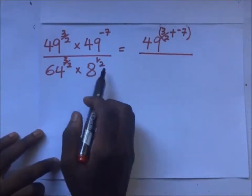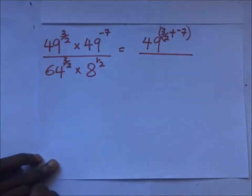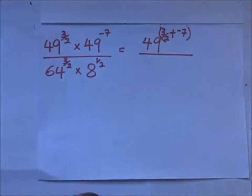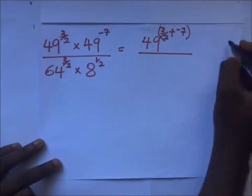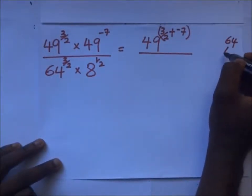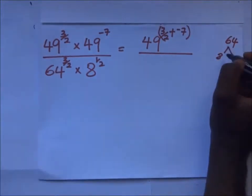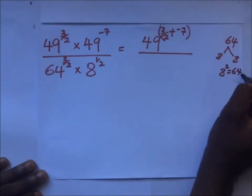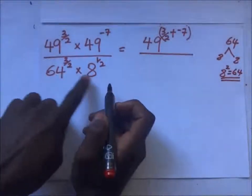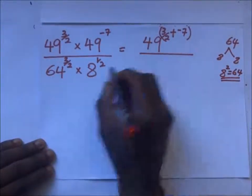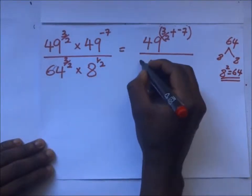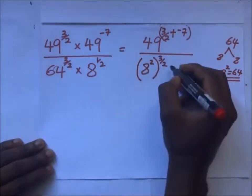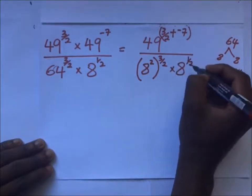Now we have 64 to the power 3 over 2 times 8 to the power 1 half. The bases are different — how can we make them the same? If you factorize 64 in side work: 64 divided by 8 is 8, so 8 times 8 is 64, meaning 8 squared equals 64. So we rewrite 64 as 8 squared, giving us 8 squared to the power 3 over 2, times 8 to the power half.